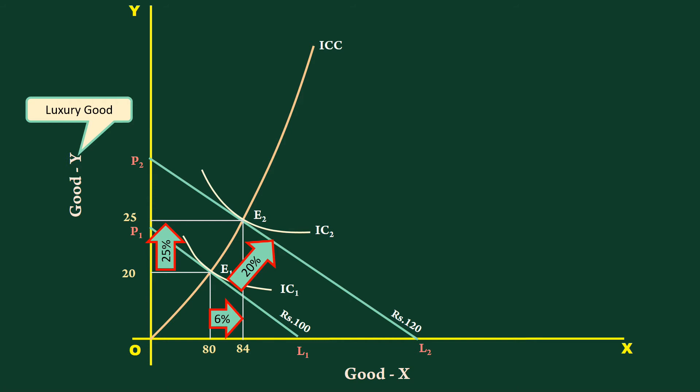Goods having such a relation between income and quantity is a necessary good. Good X is a necessary good.